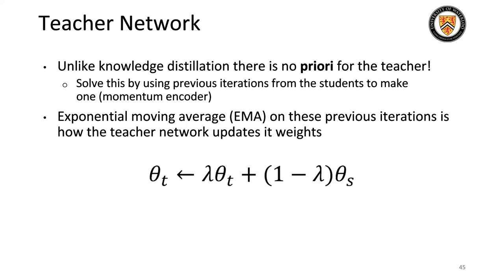Unlike knowledge distillation, there's no prior for the teacher. We solve this using previous iterations from the students — this is the momentum encoder. The exponential moving average governs how the teacher network updates its weights based on previous student iterations. When the model is re-initialized, both networks start at random weights, so we update the teacher based on the student, and then the students learn from this updated teacher. The parameter lambda controls how much is kept from the original teacher network, and its inverse controls how much the students' moving average influences the teacher.